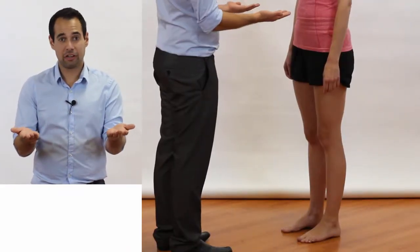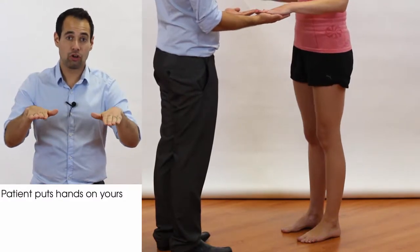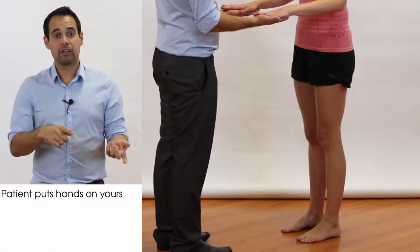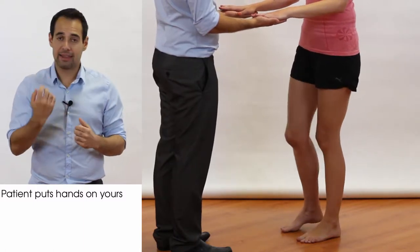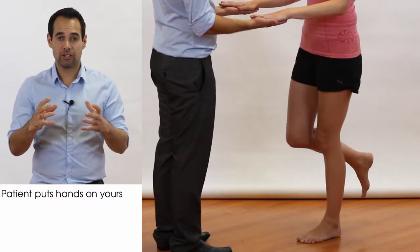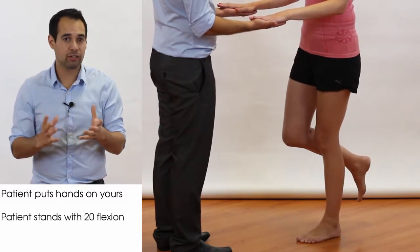You as the therapist are going to be standing with your hands out in front of you, with your palms up, and this allows your patient to put their hands on top of yours for some support. We're going to make sure that the patient stands on one leg. That leg is going to be the leg that we're testing, and we're going to ask our patient to bring their knee into about 20 degrees of flexion.